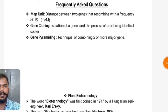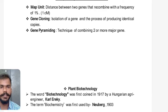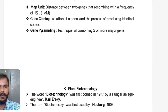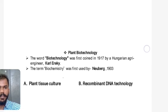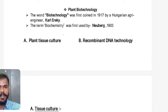Some frequently asked questions: A map unit is the distance between two genes that recombine with a frequency of 1%. This map unit is defined as one cM or centimorgan. Gene cloning means the isolation of a gene and the process of producing identical copies of that gene. Gene pyramiding is the technique of combining two or more major genes, generally to provide vertical or horizontal resistance to insect pests or diseases in crop plants.